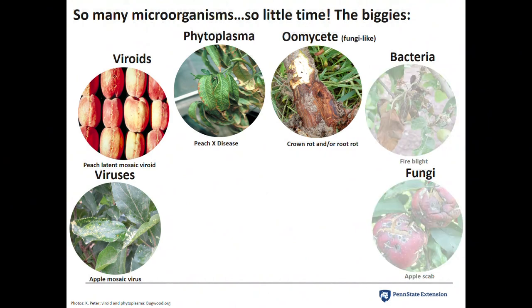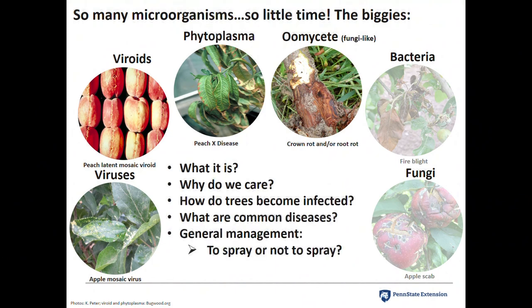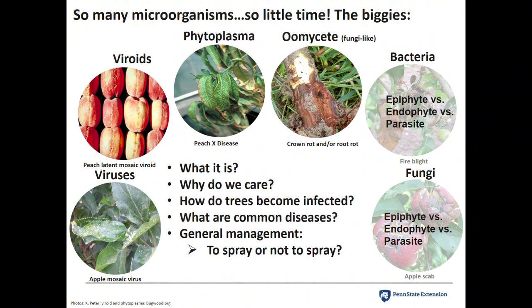For today's purposes, I'm going to focus on these four groups and cover what they are, why we care, how trees become infected, what are the common diseases associated with these organisms, and general management strategies — basically, can you spray for some of them or not. The last bit I'll chat about is how bacteria and fungi can exist in the orchard as epiphytes, endophytes, or parasites, and the differences between those types of existences.